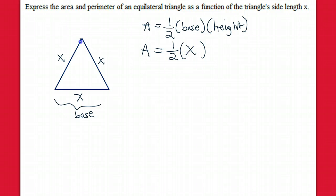The height is a perpendicular bisector of both the angle and the side, so that it cuts the side in half and this distance is x over 2.